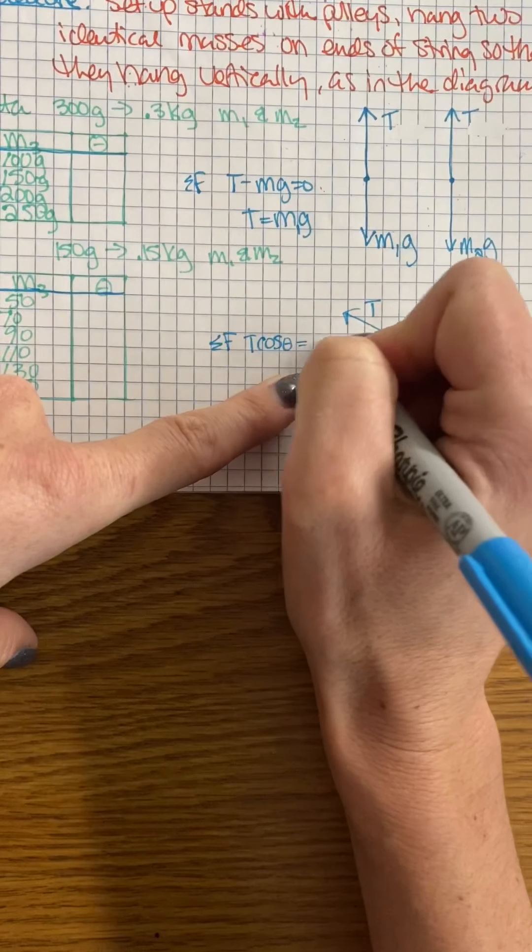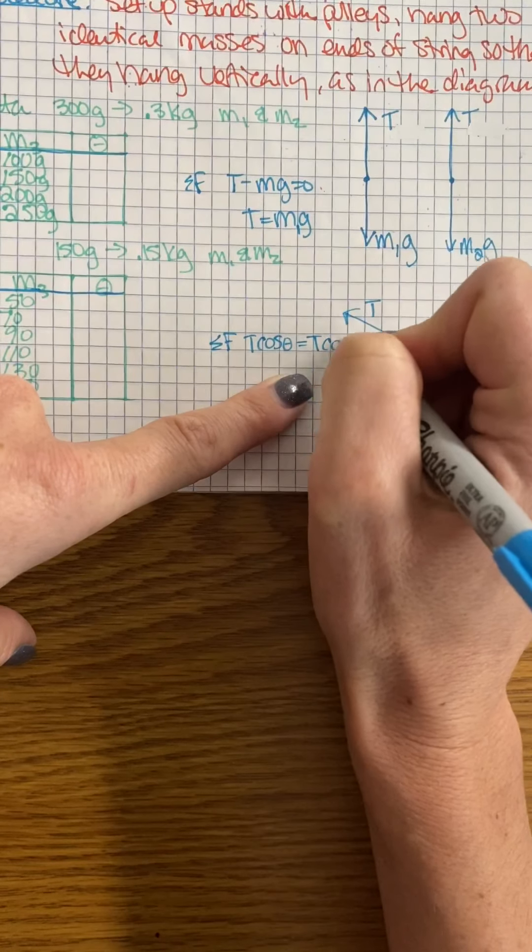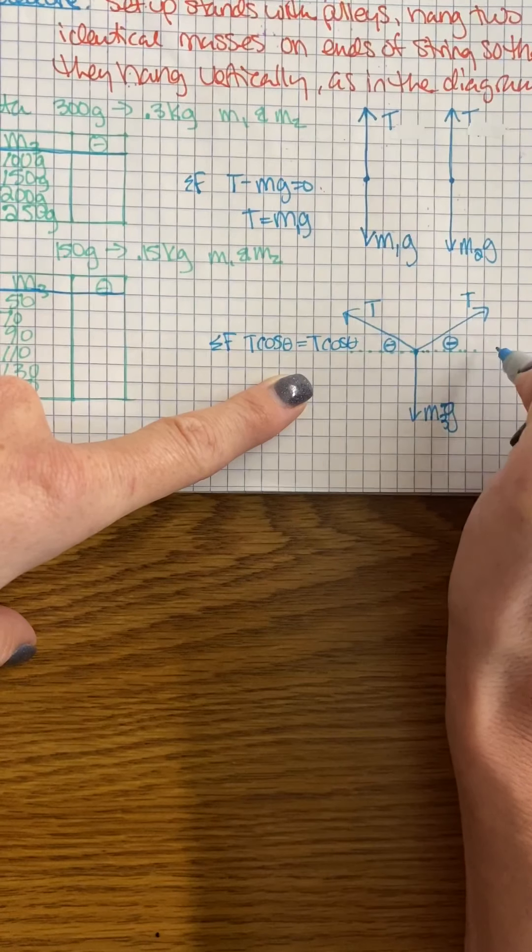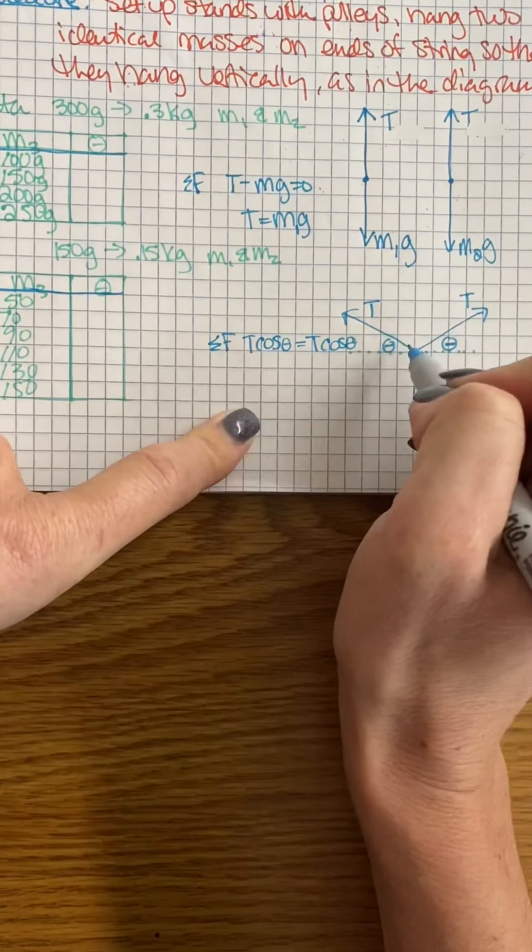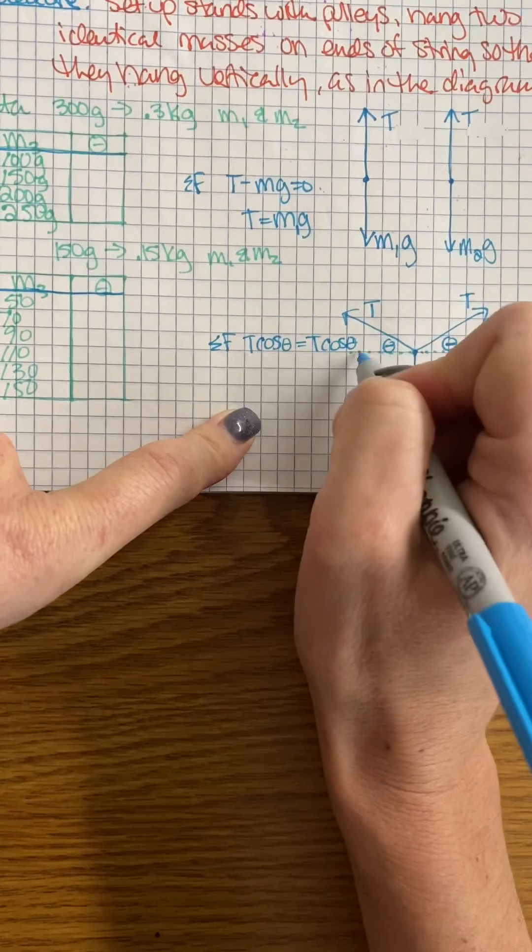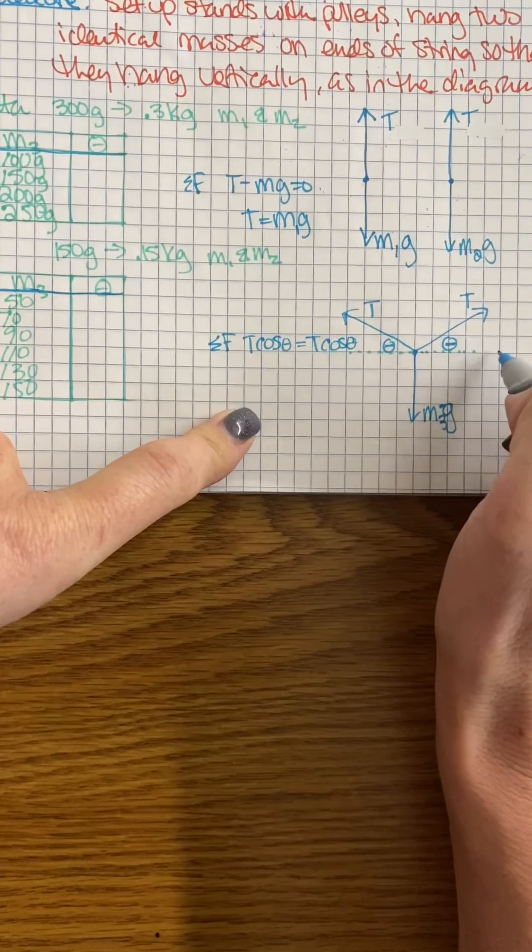Since my angles are the same and my tension is the same, they just cancel out. So I have one leftward force and one rightward force component—we would subtract them from each other and they would be equal to zero.